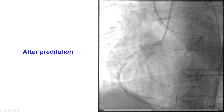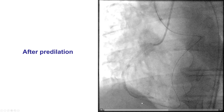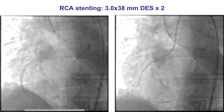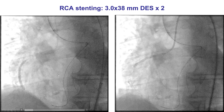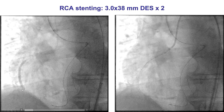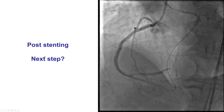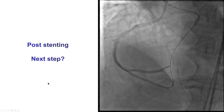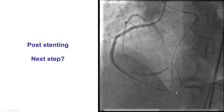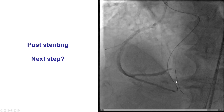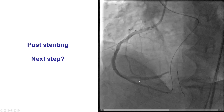Following that, we trapped and externalized and predilated. We did a small puff which showed that there was still persistent dissection. That is why we decided to stent without affecting the distal bifurcation. We placed two 3.0 by 38 mm drug-eluting stents all the way from the distal RCA to the ostium of the right coronary artery. Unfortunately, what we saw afterwards was persistent dissection — there was still subintimal dissection in the posterolateral without antegrade flow. The same was true into the PDA, which frankly surprised us because by going retrograde we thought we had secure distal true lumen wire position into the PDA.